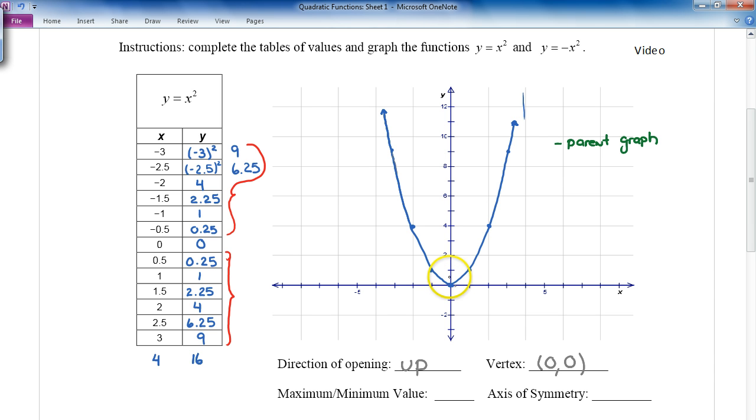The maximum or minimum value. Well, in this case we have a minimum value we can see, and that minimum value occurs at the vertex. So we say the minimum value occurs at (0, 0).